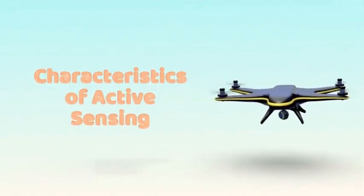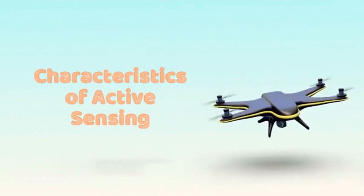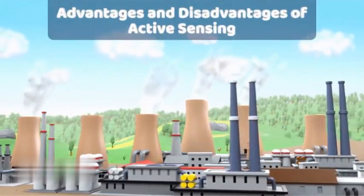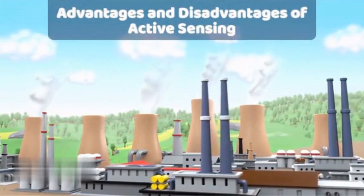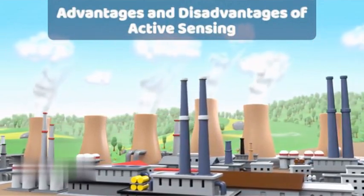Its advantages include operating independently of ambient conditions and enhancing accuracy. Despite its benefits, active sensing has higher power consumption and can be intrusive as the emitted energy may disturb the environment.